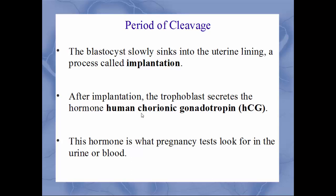After implantation, the trophoblast will secrete a hormone called HCG — human chorionic gonadotropin. This is the hormone tested for with pregnancy tests, both urine and blood. The only reason a woman makes this hormone is when she is pregnant, though some current research shows this hormone could also be found in males with testicular cancer.